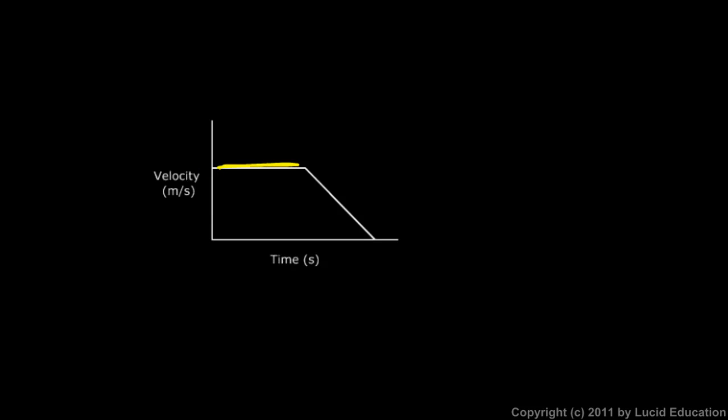This whole region here where the graph is flat, that region, and you want to write this in your notes, that is a region where the object is moving at a steady speed. And you can see that because over time, the velocity doesn't change.